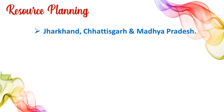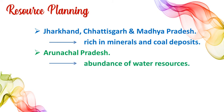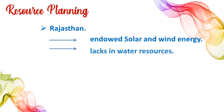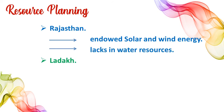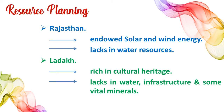There are certain regions rich in certain types of resources but deficient in others. For example, Jharkhand, Chhattisgarh and Madhya Pradesh are rich in minerals and coal deposits. Arunachal Pradesh is abundant in water resources but lacks infrastructure. Rajasthan is endowed with solar and wind energy but lacks water resources. Ladakh is a totally isolated area with a very rich cultural heritage, but it is deficient in water, infrastructure and some other vital minerals.